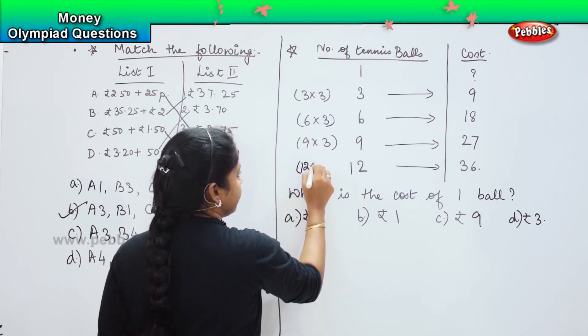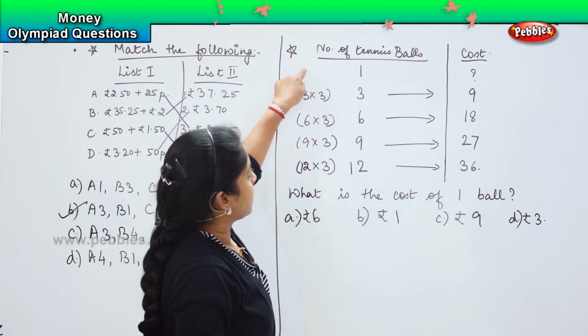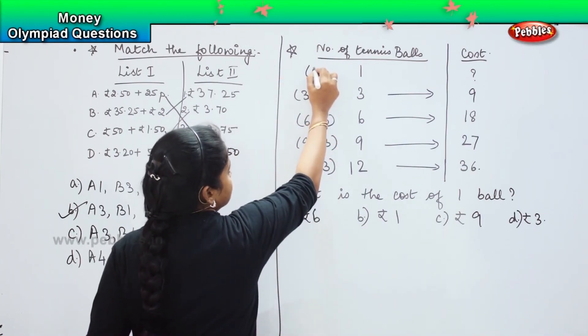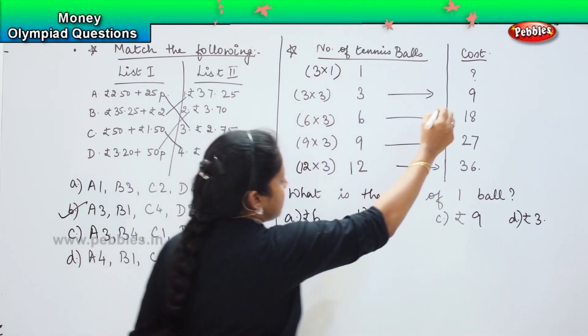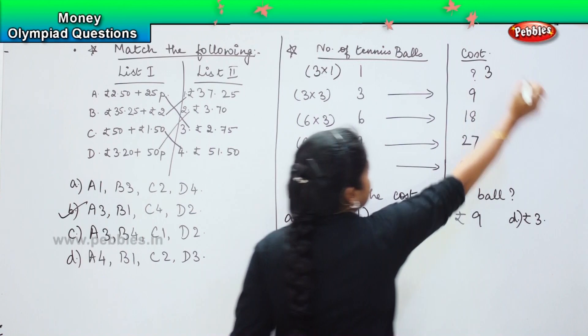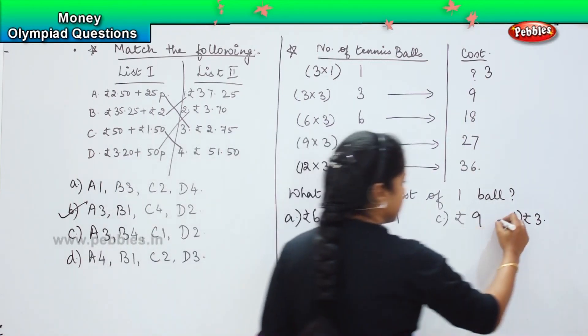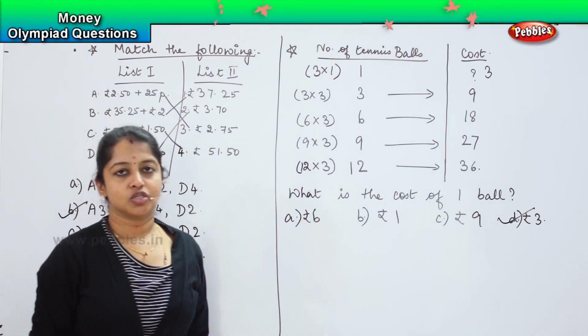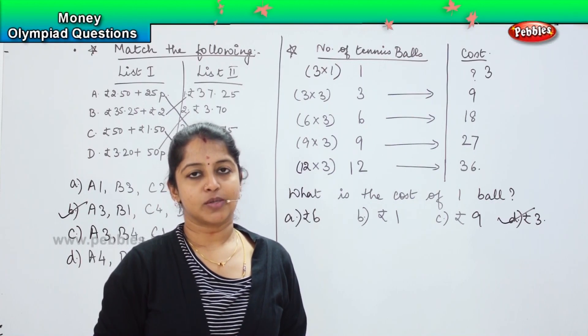So, what will come here then? Very good. Here also, we need to multiply 3 into 1 which will give me the answer here. So, what is the value of 1 ball? Yes, option D, value of 1 tennis ball is rupees 3. Got it? Shall we proceed with other questions?